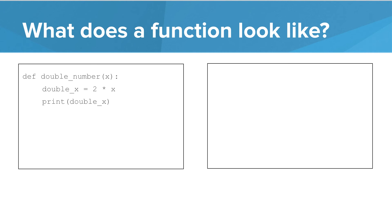When we define a function, nothing actually happens in the console. At this point, we've merely taught Python how to print a number doubled. Now we have to tell Python to do it. We do this by calling the function. Notice that we use a function name and put the parameter inside the parentheses. Each time we call it, the code in the function gets executed. This is part of why functions are valuable — they allow us to save some code for later and then use and reuse it without typing it out each time.